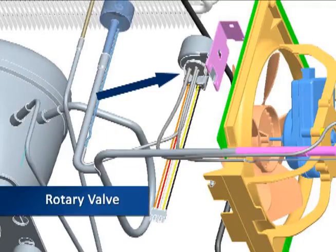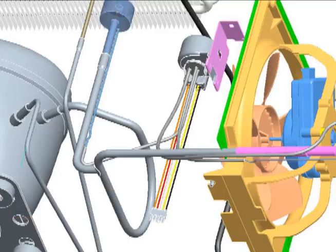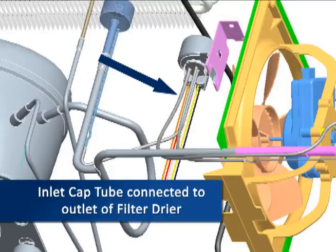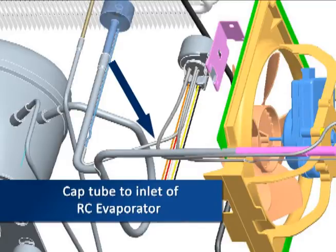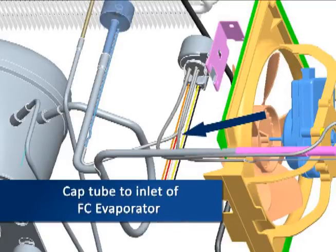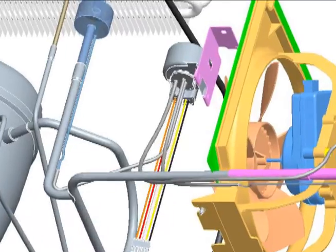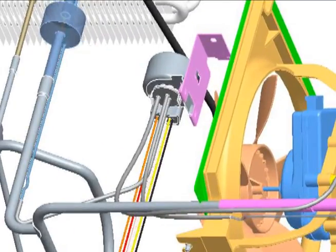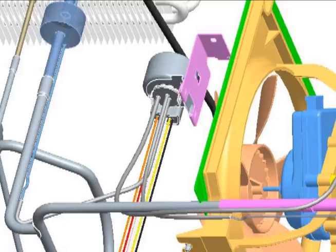The rotary valve consists of a rotating mechanical valve located inside a hermetically sealed enclosure. The valve has three tubes attached. The inlet cap tube is connected to the outlet of the filter dryer. There are two cap tube outputs: one connected to the inlet of the RC evaporator, and the other to the inlet of the FC evaporator. A magnetic coil slips over the valve enclosure. A digital signal is transmitted from the control board to the coil, and the resulting magnetic field causes the internal valve to rotate. This signal cannot be measured with a conventional voltmeter. There are three different valve positions: valve closed, valve open to the RC evaporator, and valve open to the FC evaporator.